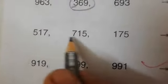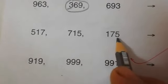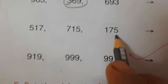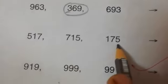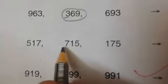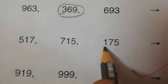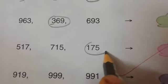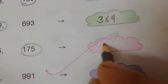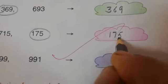Read it. 517, 715 and 175. Now which number is the smallest? Check the hundreds first: 500, 700, 100. Yes, this is the smallest number. We will write here 175.